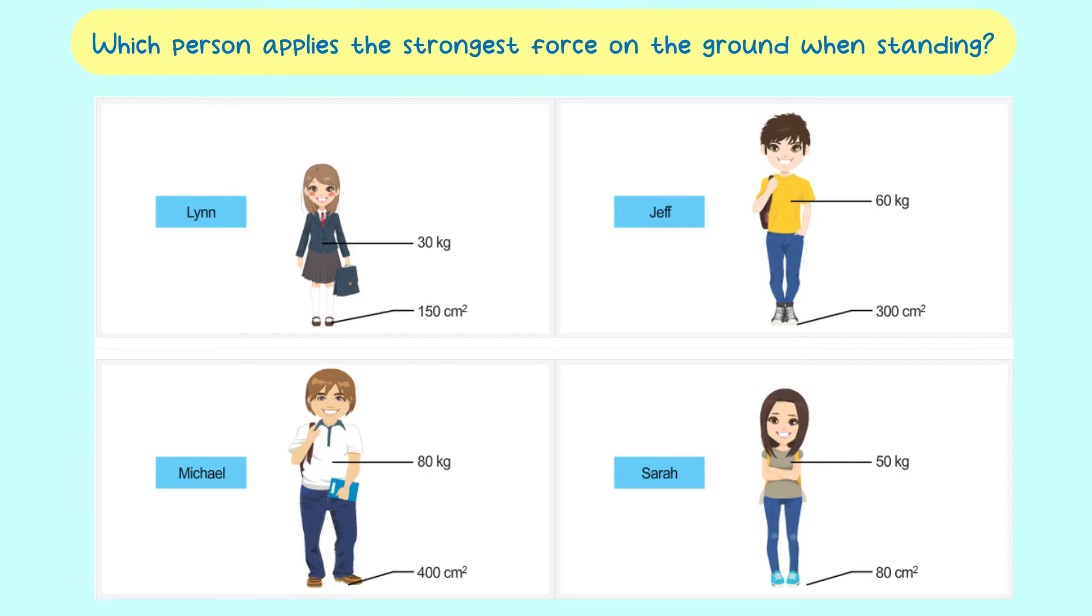The answer is Sarah. Sarah produces 62,800 Newton per square meter of pressure. This may be due to the size of her feet, which is less surface area.